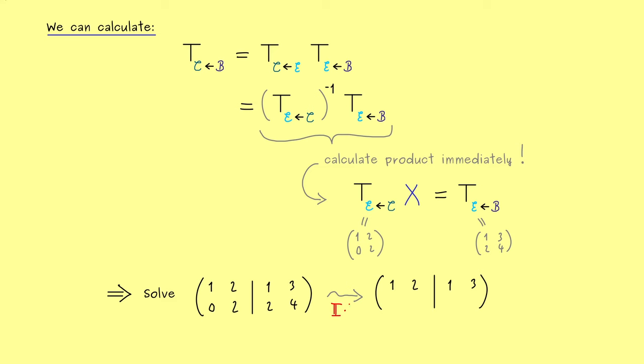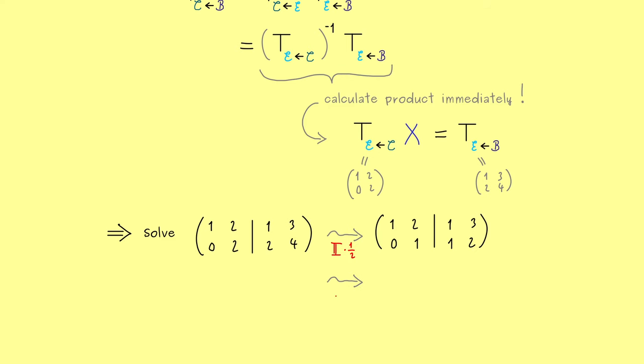Ok, here our first step should be that we multiply the second row by 1 half. Because then, we already have the 1 here in the right lower corner. And then in the next step, we want to generate a 0 here. Hence, from the first row, we subtract 2 times the new second row. And then we have it, we have the identity matrix here on the left-hand side. And on the right-hand side, we find (-1,-1) here. And there we have it, the system is completely solved.